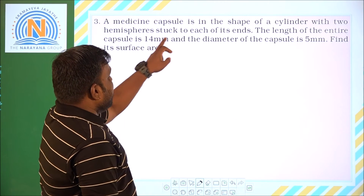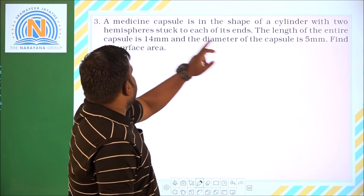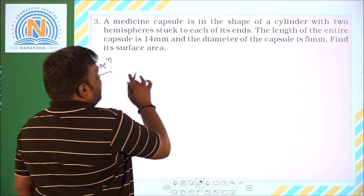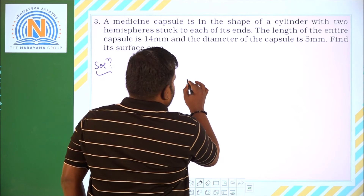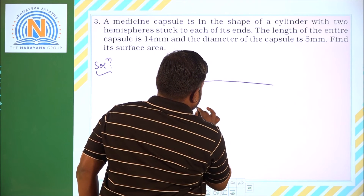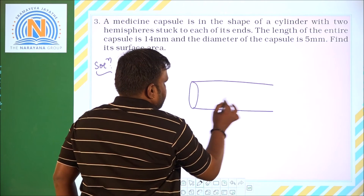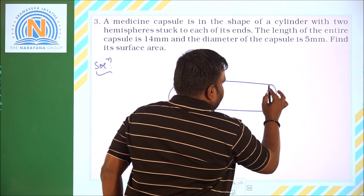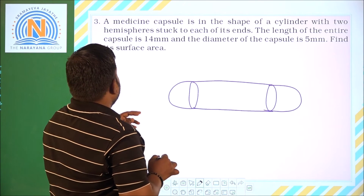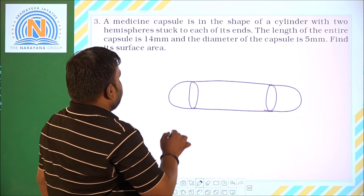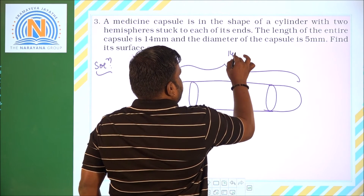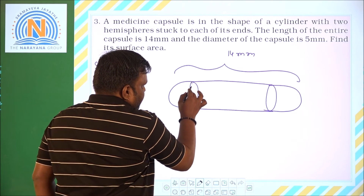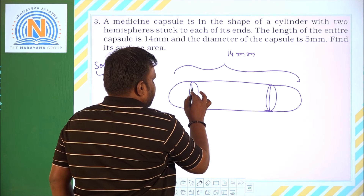Now coming to question number 3. A medicine capsule is in the shape of a cylinder with two hemispheres stuck to each of its ends. Let us take this horizontally: this is the cylindrical part, and on either ends we are having two hemispheres. The length of the entire capsule is 14 mm and the diameter of the capsule is 5 mm.